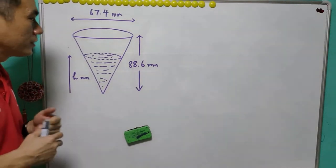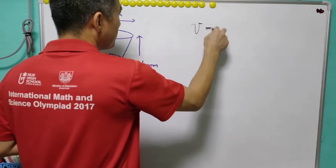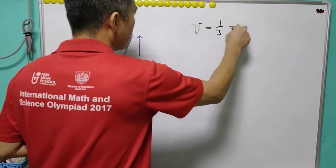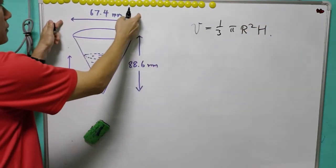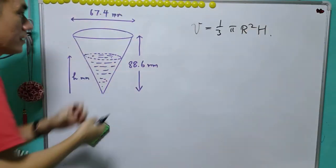And the answer is not necessary. The volume is given by the formula 1 over 3 pi r square h, where this is the diameter and this is the h.